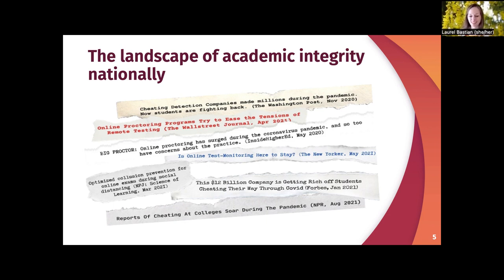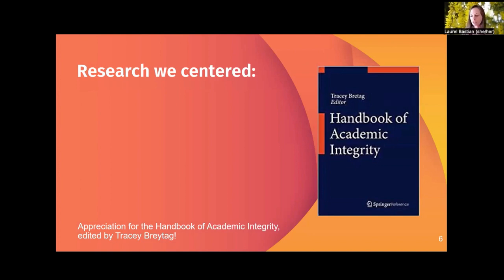What we just described as our context is also a context we saw in headlines across the country — it's still a major topic of discussion for many universities and many units. So we wanted to ask ourselves what the research says about how we can bolster academic integrity and what the reasons and contributors for academic misconduct in higher education are. The research that we most appreciated was the Handbook of Academic Integrity edited by the late Tracy Braytag, and we particularly appreciated that it was global in scope and very comprehensive.